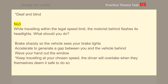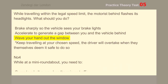Number 3. While traveling within the legal speed limit, the motorist behind flashes its headlights. What should you do? Keep traveling at your chosen speed. The driver will overtake when they themselves deem it safe to do so.